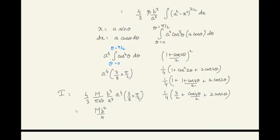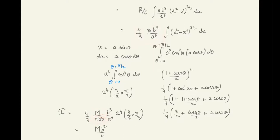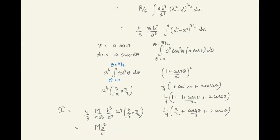Simplifying and substituting β = m/(area of ellipse) = m/(πab), the remaining terms combine to give the moment of inertia of the elliptical plate about its major axis as mb²/4, where m is the mass.